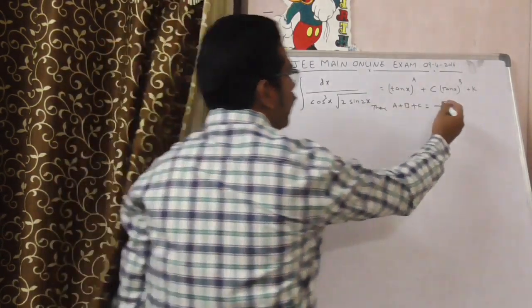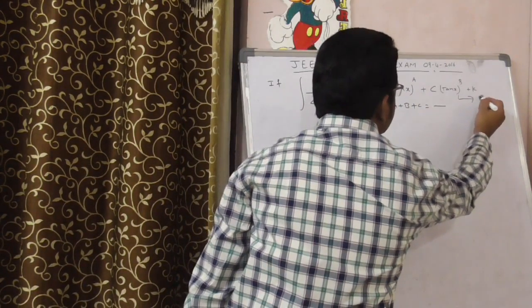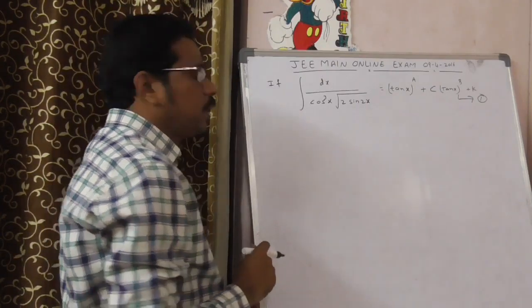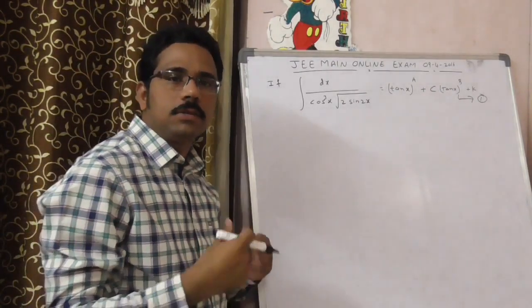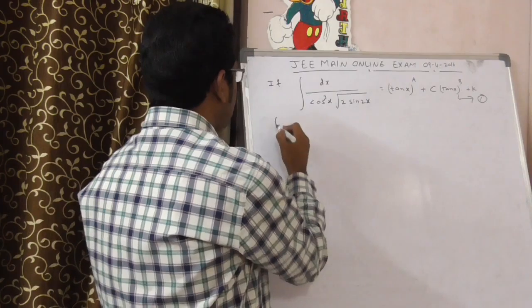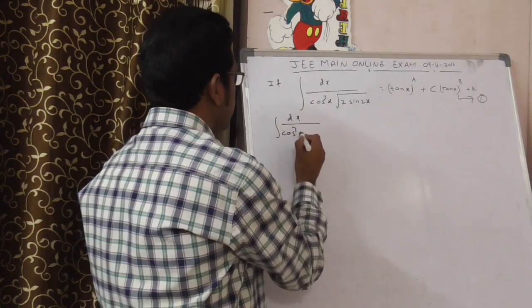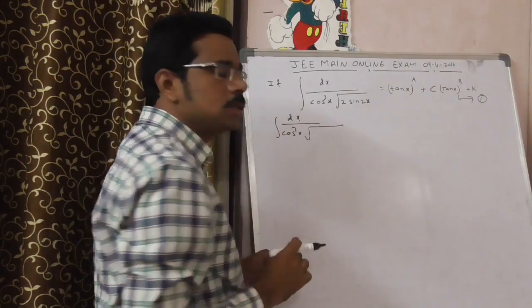I am taking the given expression as equation number 1. This question can be solved by using one of the integration methods. I am taking LHS now, integral dx by cos cube x square root of, what is sin 2x?